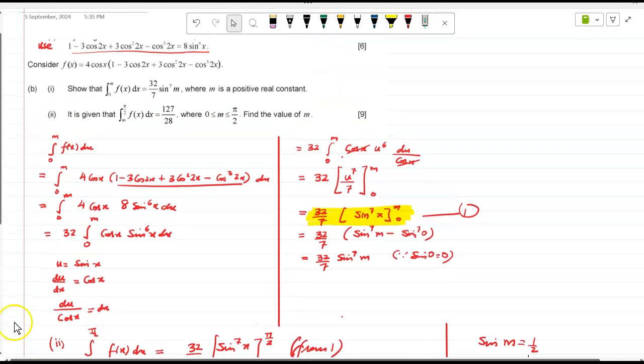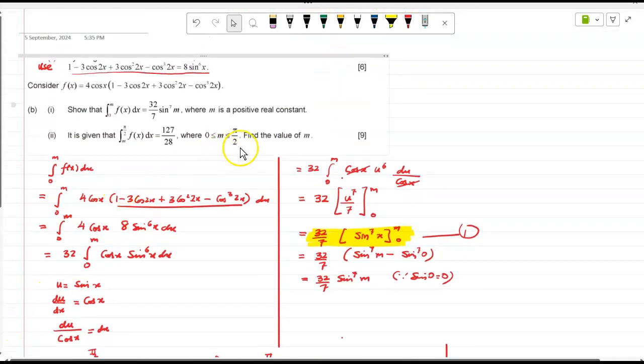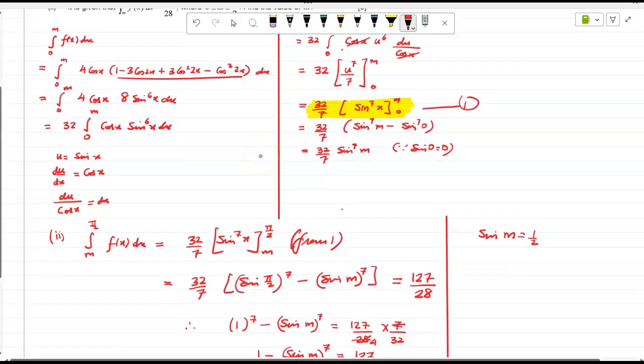What's my domain given to be? 0 to pi by 2. So 0 to pi by 2, so sine 30, 30 is pi by 6.